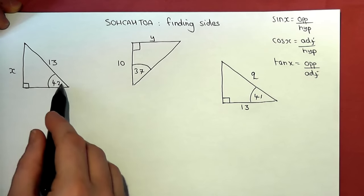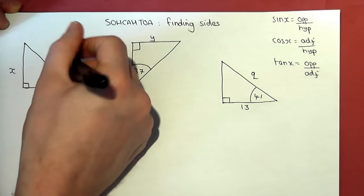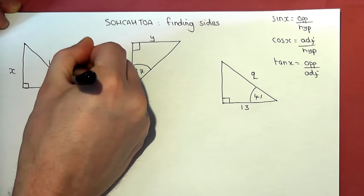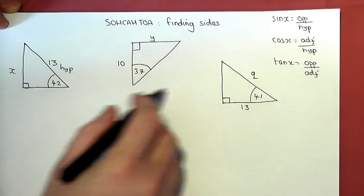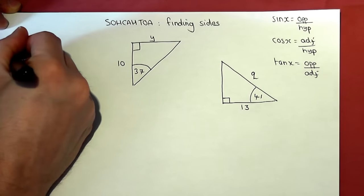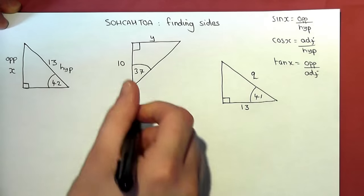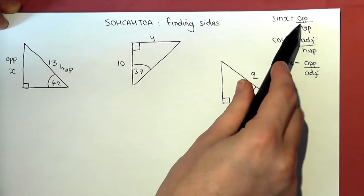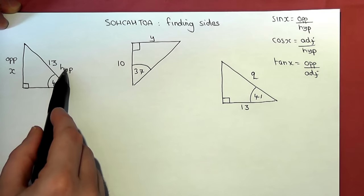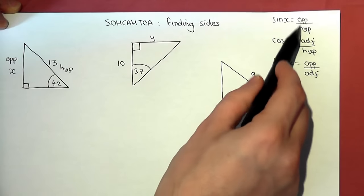In the first example, the 13 is the hypotenuse — it's opposite the right angle. The unknown is opposite the angle, so that's called the opposite. We then identify which of the equations uses opposite and hypotenuse. It's the sine equation.